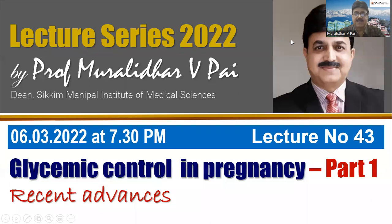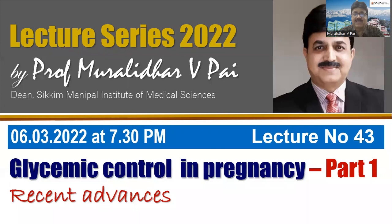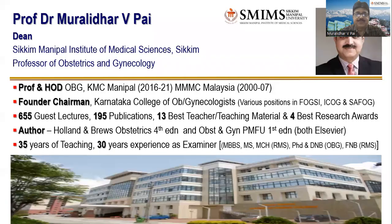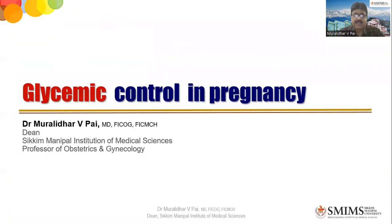I'll be talking about not only insulin and oral anti-diabetic agents, but also about analogs and newer advances in the management of glycemic control. I don't think I'll be able to finish in one class, so I've labeled this as Part One. For undergraduates, I usually take three to four classes to cover GDM. Today I will not go into all the details of GDM — I'll go straight to the management, that is, glycemic control.